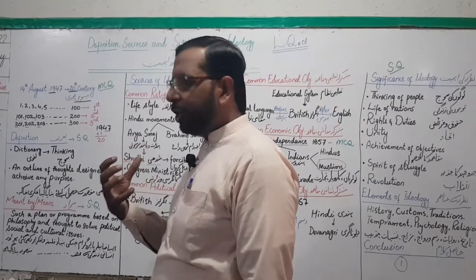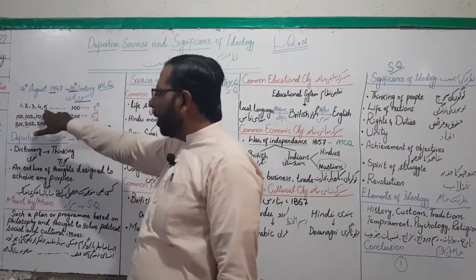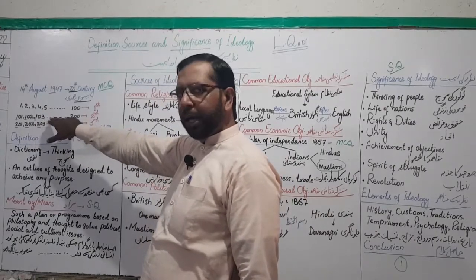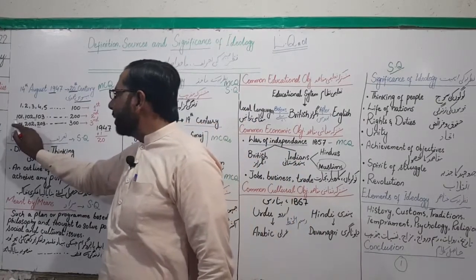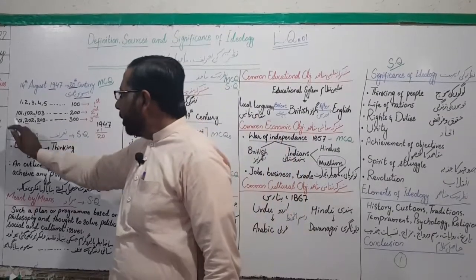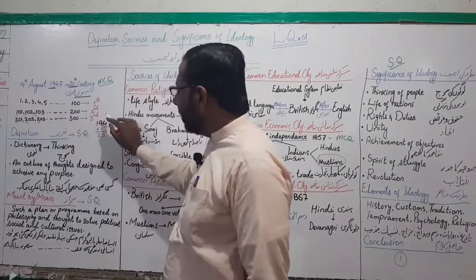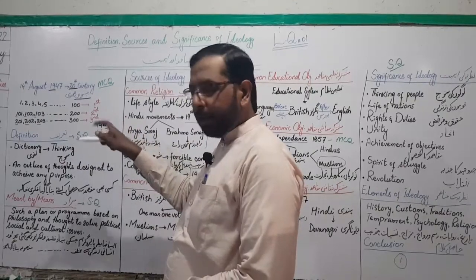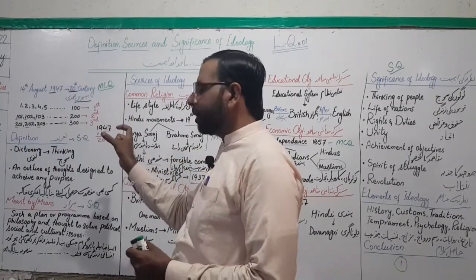To decide which century a year belongs to, there is a simple calculation. The calendar started with year one, going up to one hundred — those first hundred years were the first century. The next hundred years, 101 to 200, were the second century. Then 201 to 300 were the third century, 301 to 400 the fourth. Similarly, 1901 to 2000 — all years starting with 19 — belong to the 20th century.